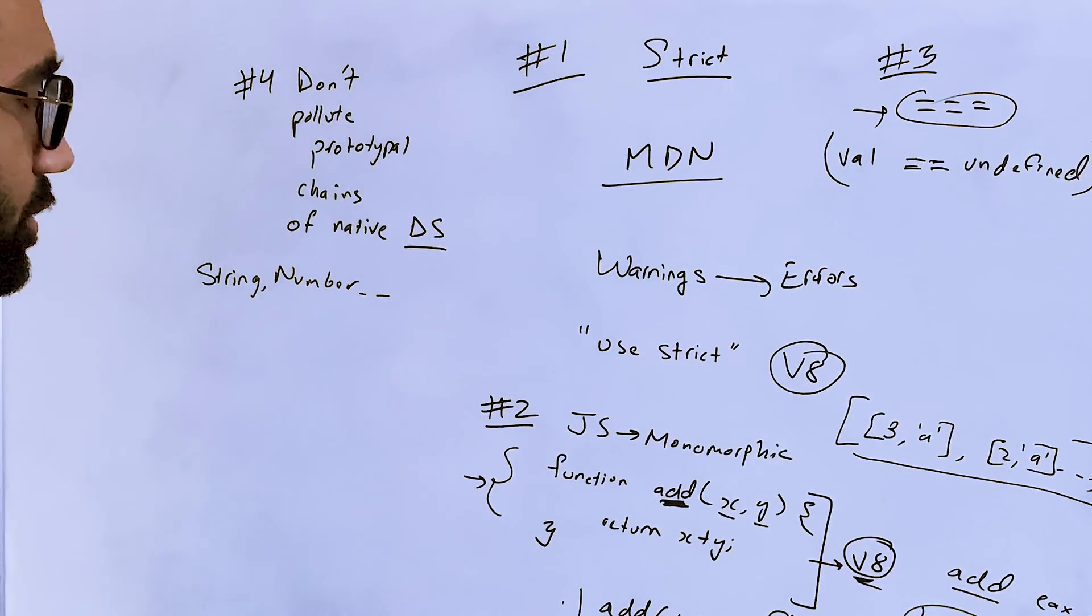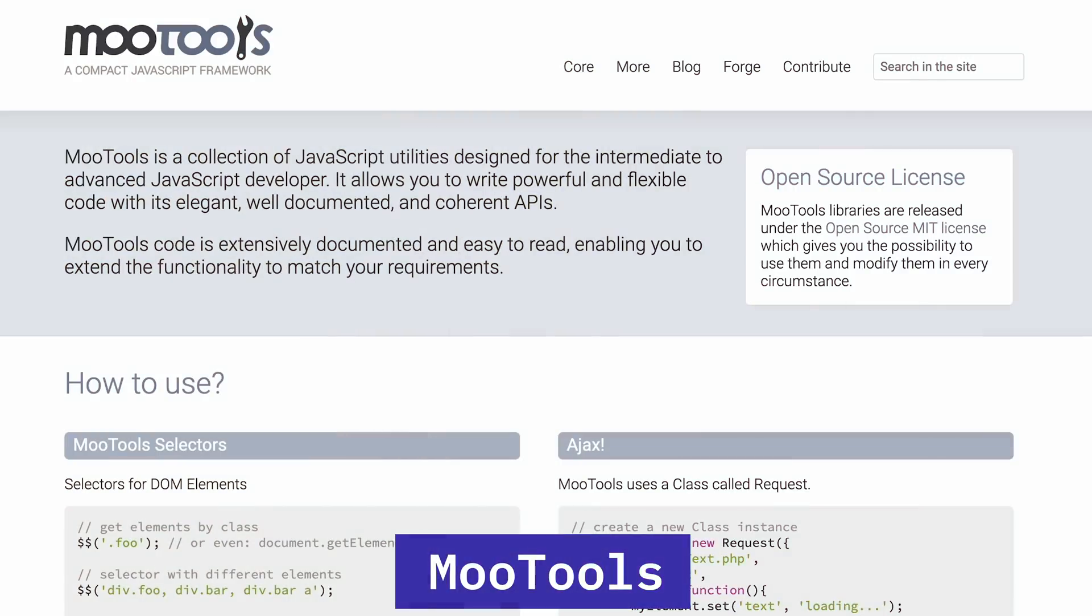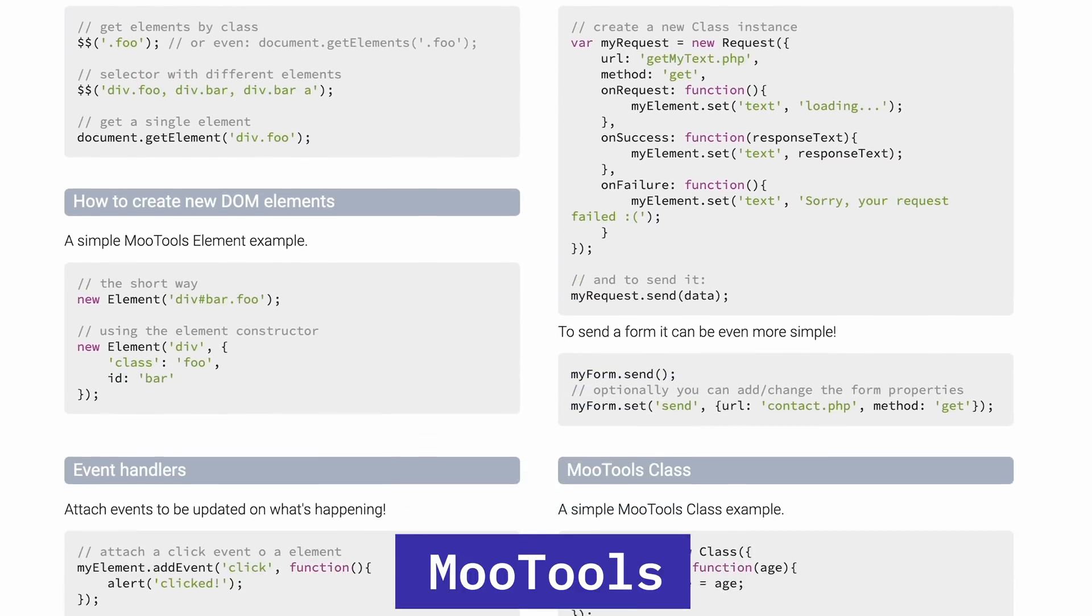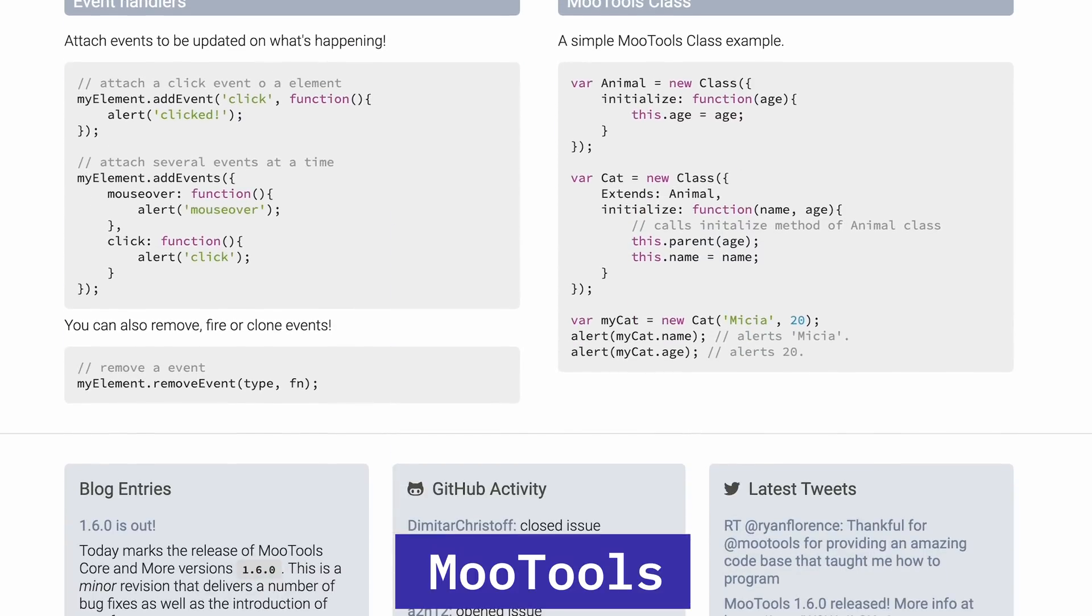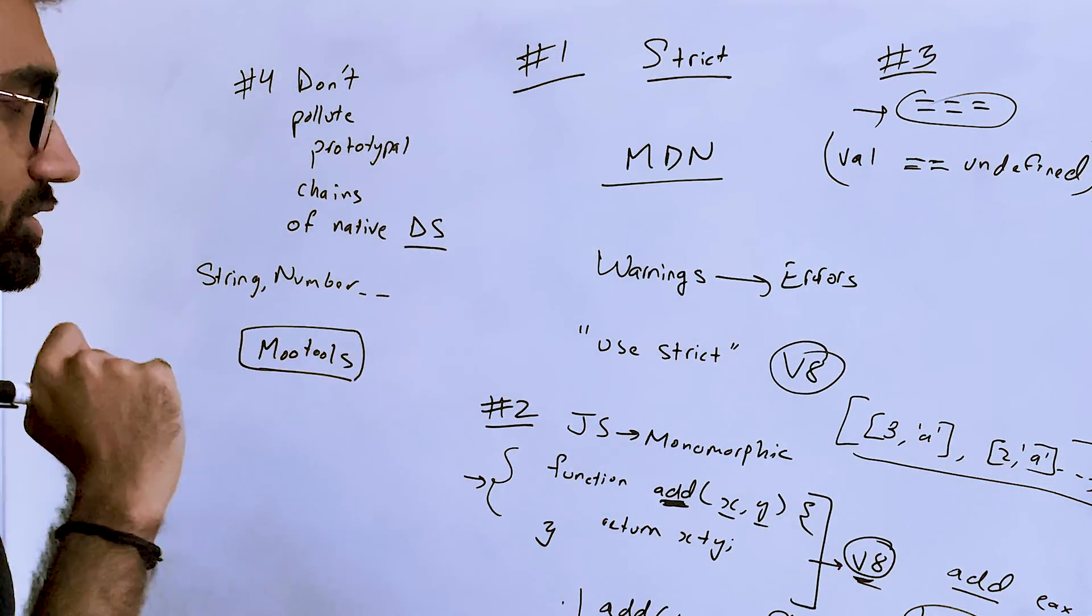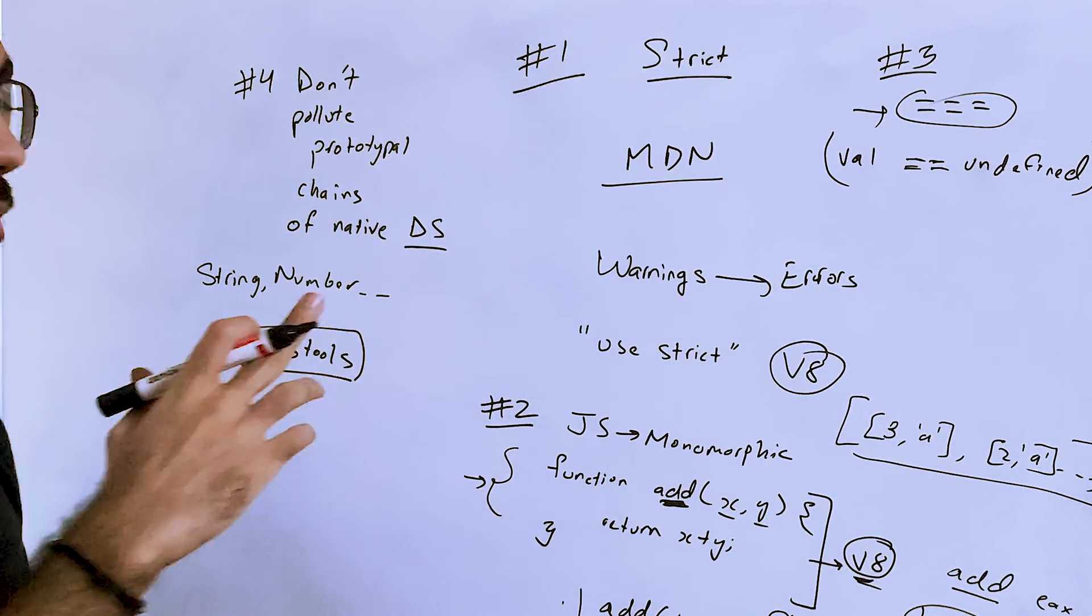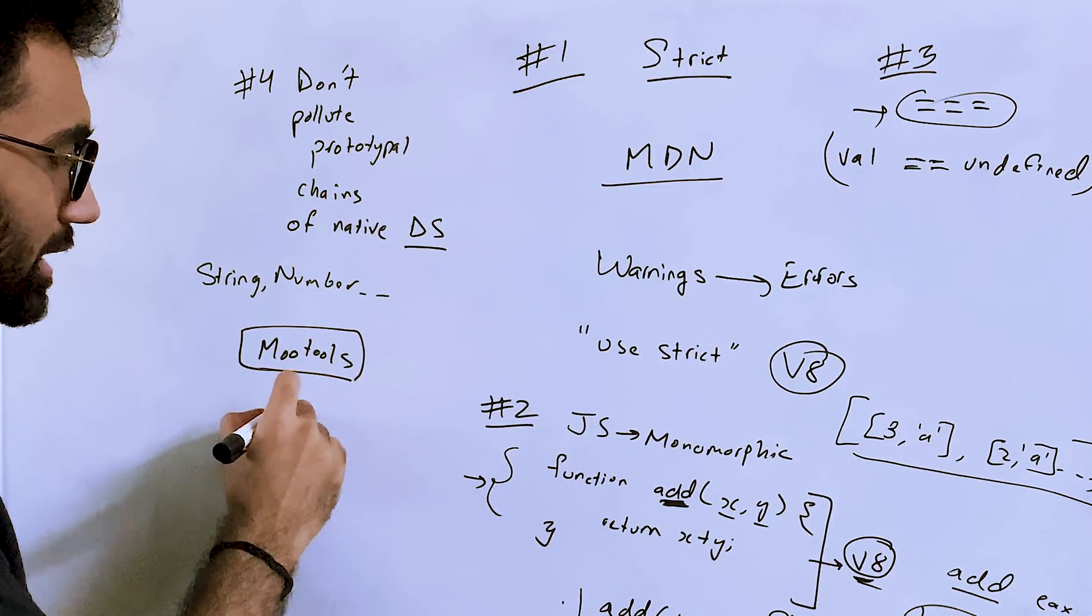I'm not sure how many of you have heard about MooTools, but MooTools is, or was, a system where it heavily added features to JavaScript by prototyping on top of existing data structures - strings, numbers, objects in JavaScript.